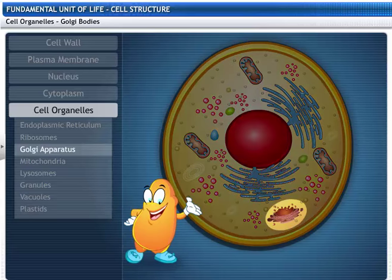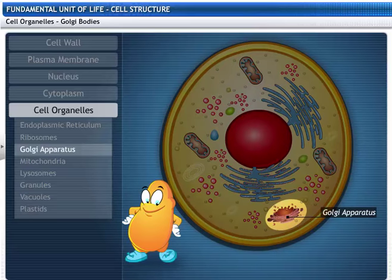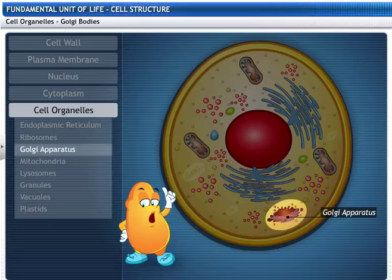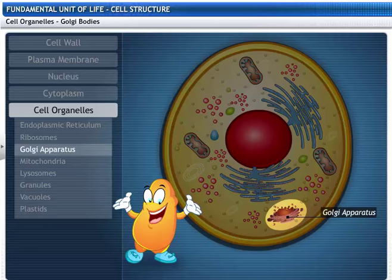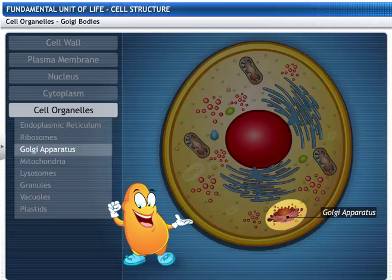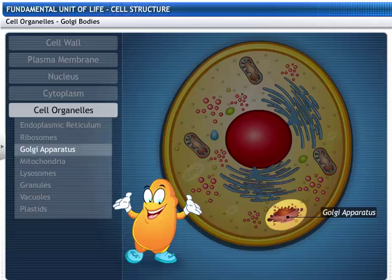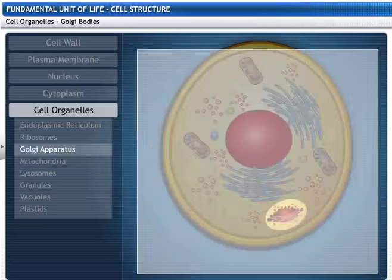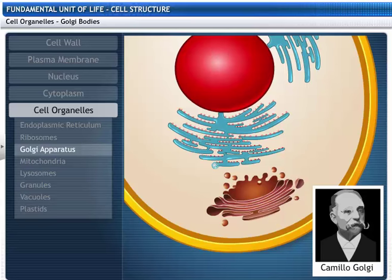Here's another organelle. This is the site for storing and transporting proteins across the cytoplasm, called Golgi apparatus. Named after Camillo Golgi, who first described it, Golgi apparatus are stacks of flattened membrane-bound sacs or vesicles. These stacks are called cisternae.